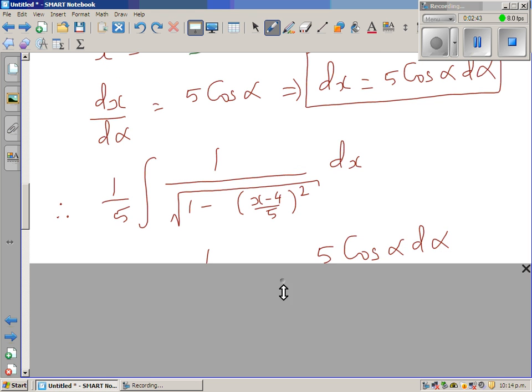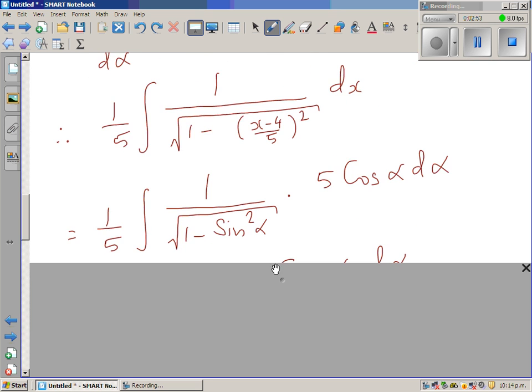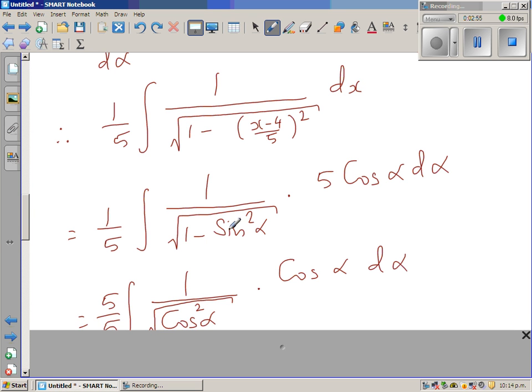So that you can see my substitution. So this is 1 over 5th, or 1 fifth times 1 over 1 minus sin squared alpha times dx is 5 cos alpha d alpha. And this is cos squared.